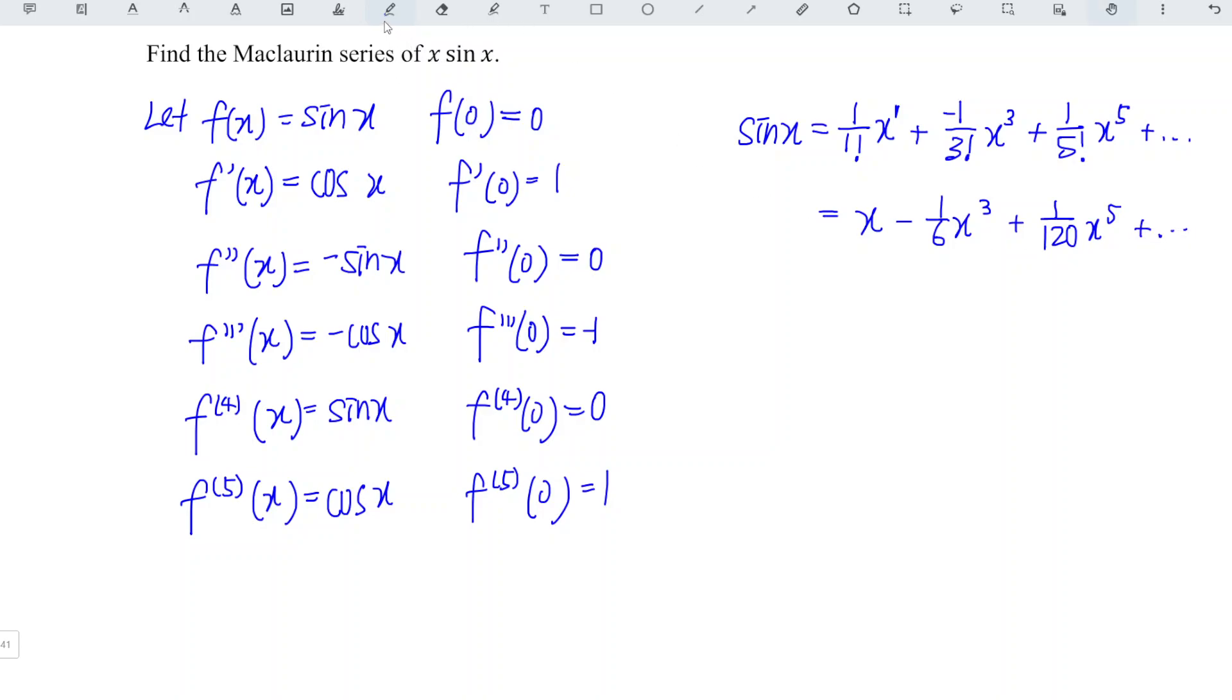Now what we have to do is just times the entire equation by x, since we need x sine x. So x times x is x squared, minus 1 over 6 x cubed times x is x to the power of 4, plus 1 over 120 x to the power of 6, and so on.